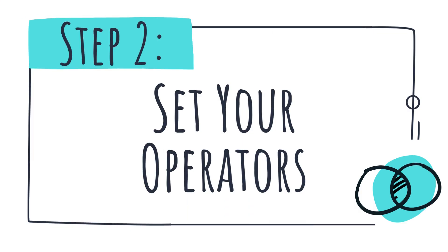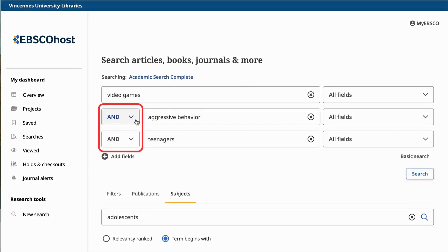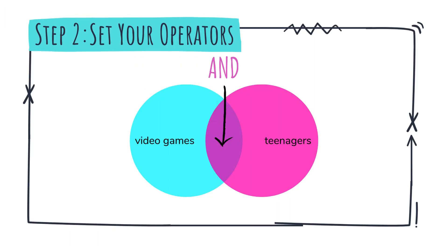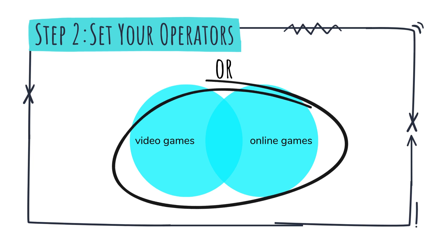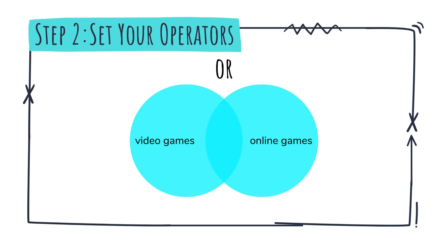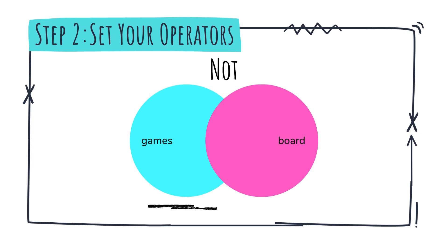Our next step in the advanced search is to set your operators. You'll notice that to the left of the search boxes are two drop-down boxes. The options provided here are called Boolean operators — the glue between your ideas. There are three options: AND, OR, and NOT. Use AND to retrieve articles that mention both terms somewhere in the article; AND generally retrieves fewer but more focused results. Use OR between two terms to retrieve articles that mention either term; OR generally retrieves a larger set of results and is useful when searching terms that mean the same thing. Use NOT to exclude terms; NOT allows you to remove results containing a specific term and generally retrieves fewer but more relevant results.